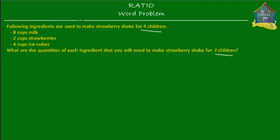So what we know is that we are going to need these ingredients in these quantities for making strawberry shake for four children, and we have to find out how much of each we're going to need for making strawberry shake for seven children. Now there are a few methods you can use to solve this problem — the ratio method, the model method, or the fraction method.